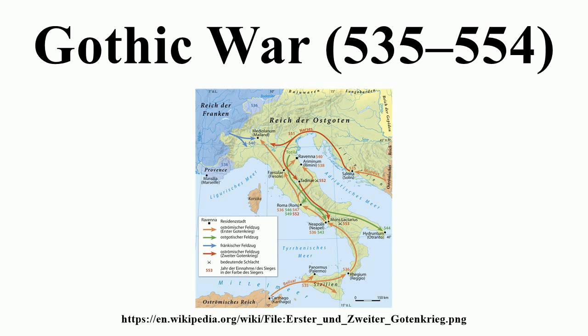All this happened in March 536, and Theodahad, learning of this success, became emboldened and rejected and imprisoned Justinian's ambassadors. Any possibility of a peaceful takeover was now over. Justinian sent the new Magister Militum per Illyricum, Constantinus, to recover Dalmatia, and ordered Belisarius to cross into Italy.